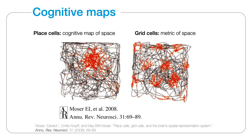Grid cells are neurons found in the entorhinal cortex that fire at hexagonally tiled points in space. They provide input to the place cells of the hippocampus, which fire at specific locations. These place cells are believed to collectively form a cognitive map representing space.